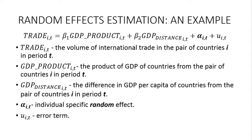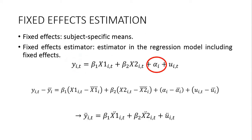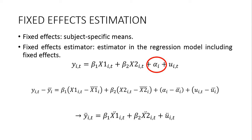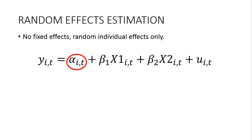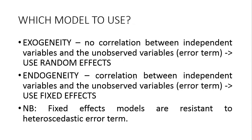The choice between fixed effects and random effects depends on your assumptions — specifically whether you expect the unobserved effect to be time-invariant or time-variant. To estimate a random effects model, your model must fulfill the assumption of exogeneity: there is no correlation between independent variables and unobserved variables captured by the error term. If you can safely assume exogeneity, random effects is a valid option. However, if you suspect endogeneity, you should use the fixed effects model.